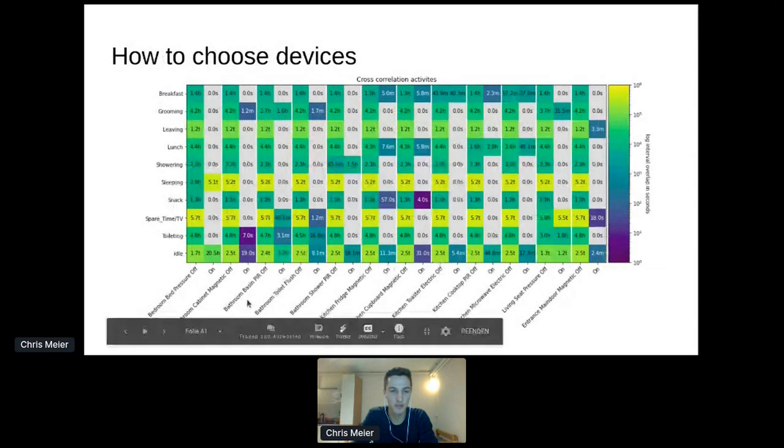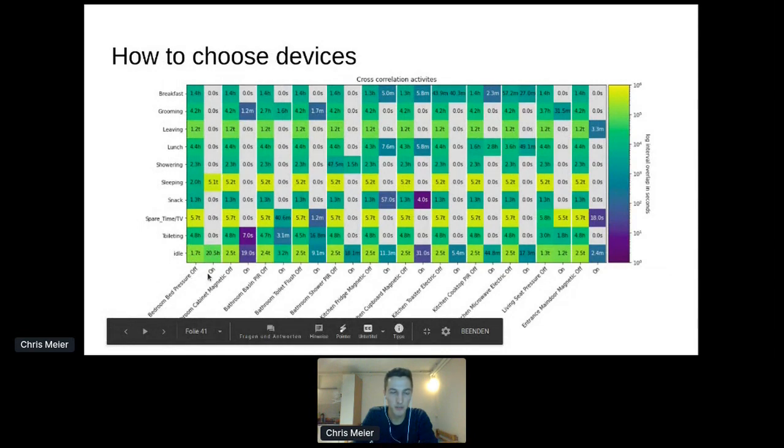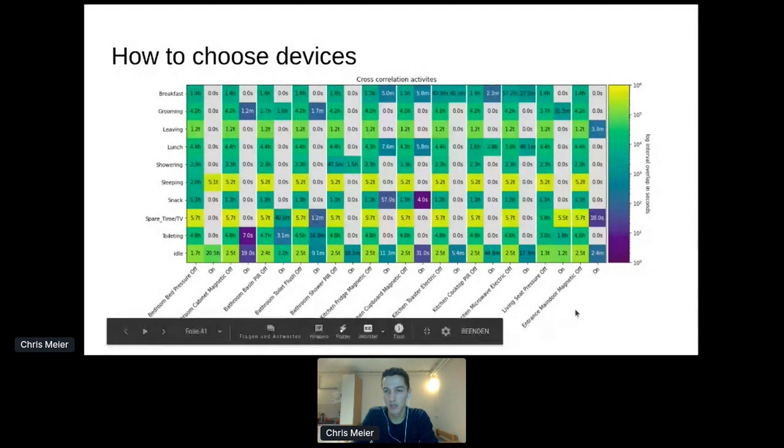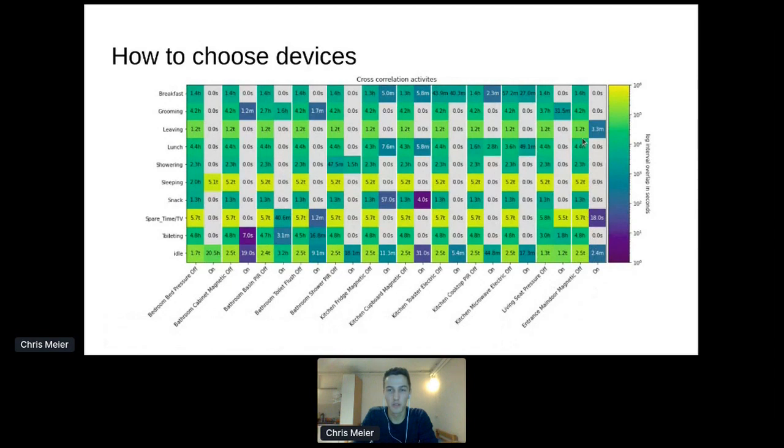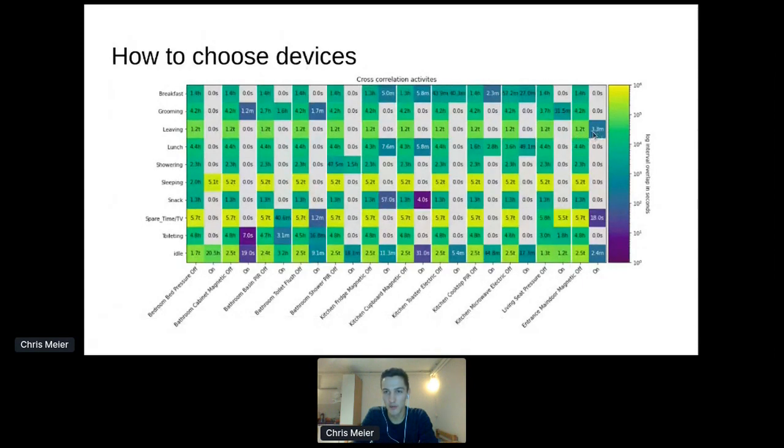The next thing is how to choose devices. What you can see here is the on and off duration of each device divided by the activities. For example, we have the bedroom bed pressure mat, and we can see that it's almost exclusively on for the activity sleeping, almost the whole time the person is sleeping - 5.2 days in total. This is pretty good, we want devices to be like this. If we look at the main door magnetic sensor, you may think this is also a good device because the probability of the sensor being on given that the person is sleeping is almost one. But the sensor is pretty bad because it is only on 3.3 minutes whereas leaving has a duration of 1.2 days. So in terms of mutual information, observing the sensor gives me nothing at all.